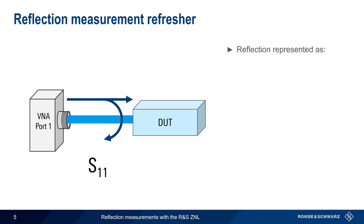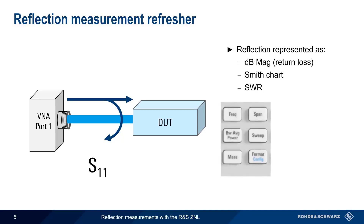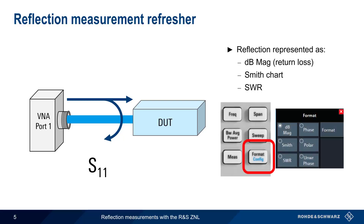The three most common ways of representing the reflected power are dB magnitude, which corresponds to return loss, a Smith chart, and standing wave ratio, or SWR. To change the format, select the Format hard key and then choose the desired format from the menu.